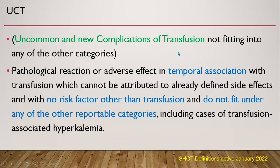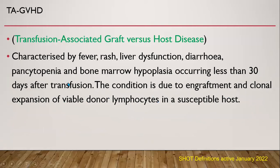Uncommon and new complications of transfusion (UCT) are pathological reactions or adverse effects in temporal association with transfusion that cannot be attributed to already defined side effects, with no risk factor other than transfusion, and do not fit under any other reportable category. This includes cases of transfusion-associated hyperkalemia. Transfusion-associated graft-versus-host disease is characterized by fever, rash, liver dysfunction, diarrhea, pancytopenia, and bone marrow hypoplasia occurring less than 30 days after transfusion, due to engraftment and clonal expansion of viable donor lymphocytes in a susceptible host.